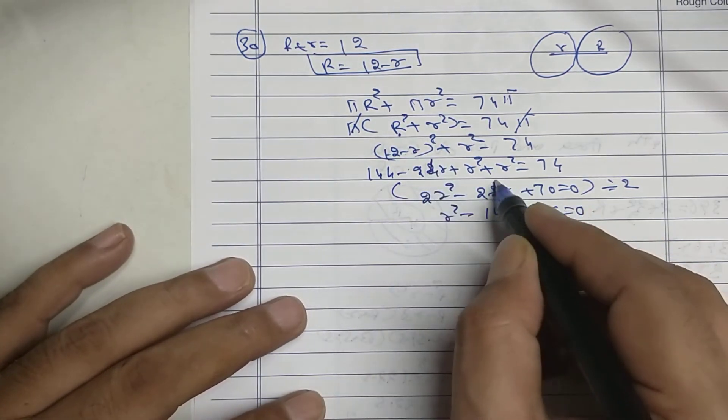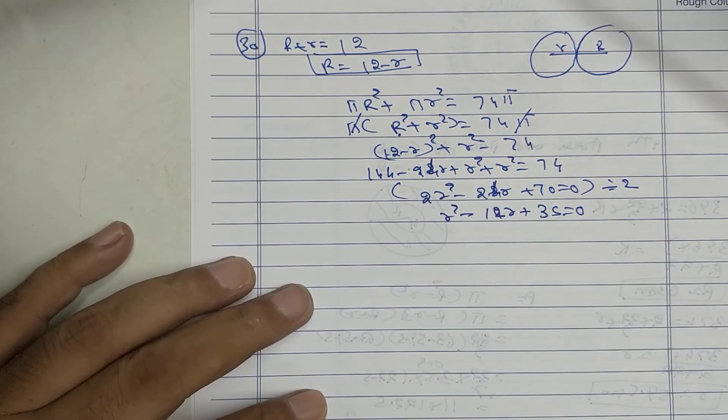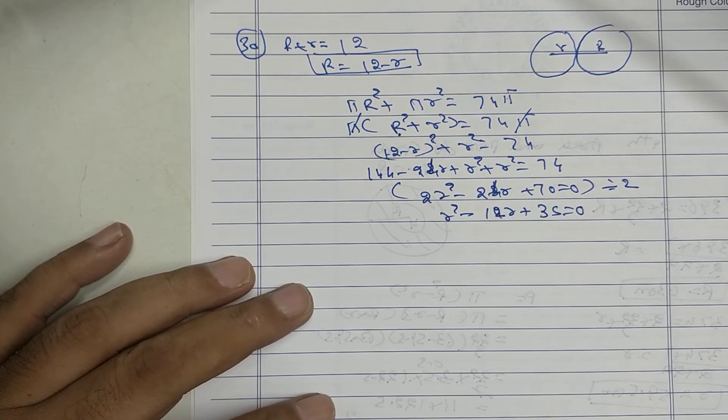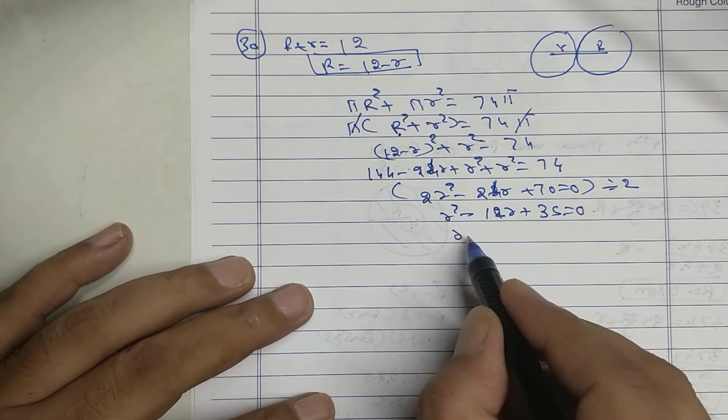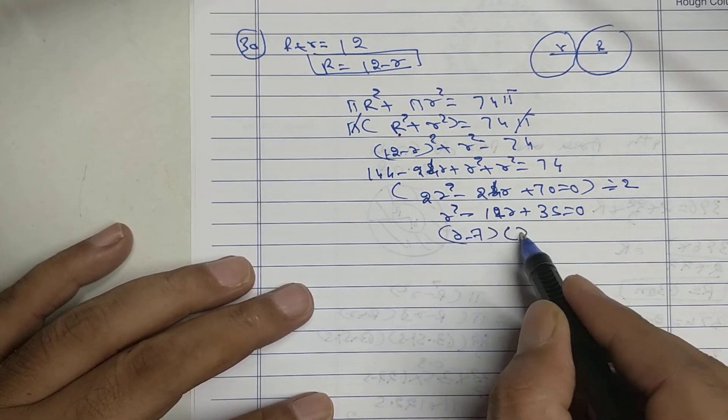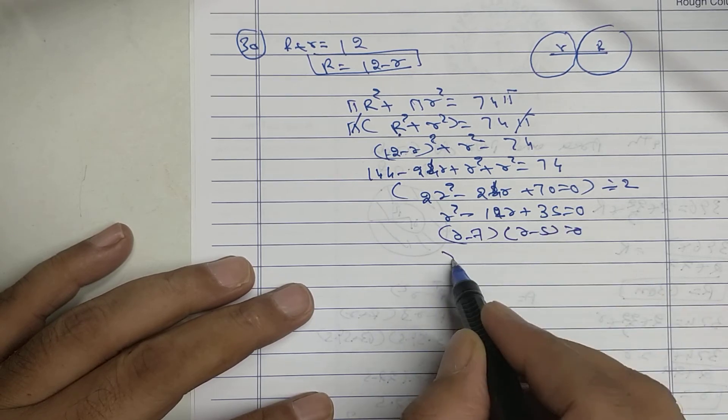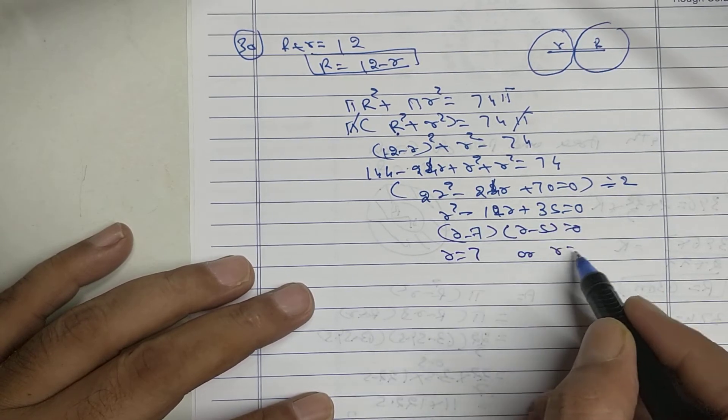This is 24, this is 24. 7 times 5 is 35, 7 minus 5 is 2. So I will get r minus 7, r minus 5 equal to 0. So r equal to 7 or r equal to 5.